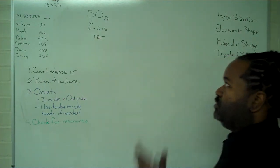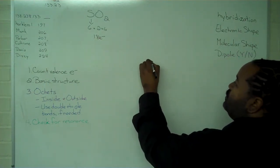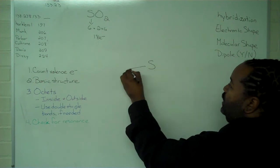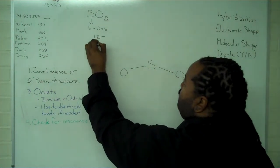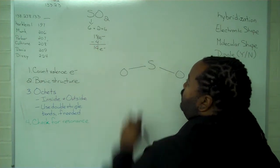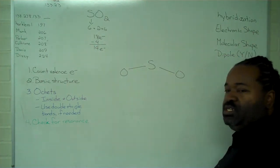The basic structure requires that we have the sulfur atom in the middle and our oxygens attached to it. This will use up 4 electrons, and in our housekeeping, that leaves us with 14.